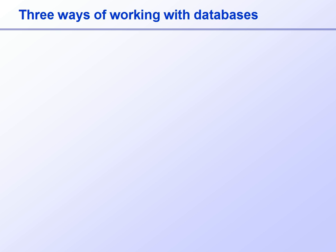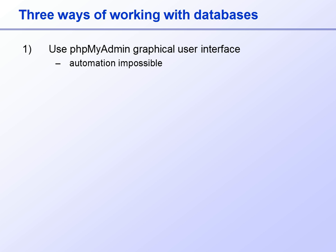The first and simplest way to work with databases is to use the phpMyAdmin interface that we looked at briefly in Chapter 3. This graphical user interface, or GUI, allows us to do everything there is to do with a database simply by clicking on buttons. We'll often use this to perform maintenance tasks on our database, as it's the easiest way to do jobs of this sort. The downside is that nothing can be automated, so its main use is for one-off jobs such as maintenance tasks for which it would be too much trouble to write a program.